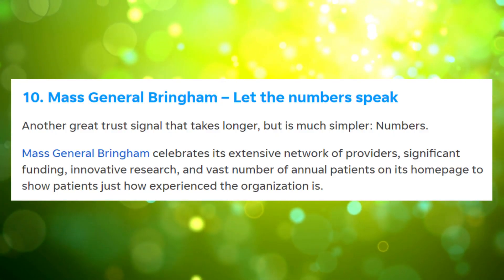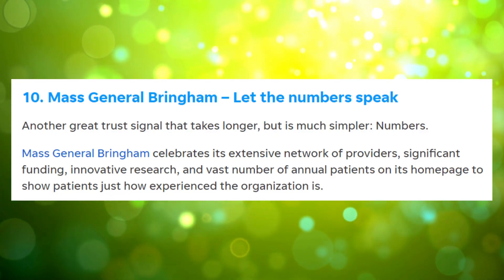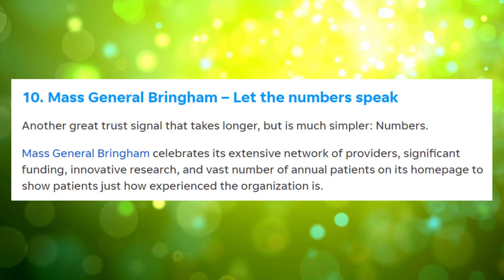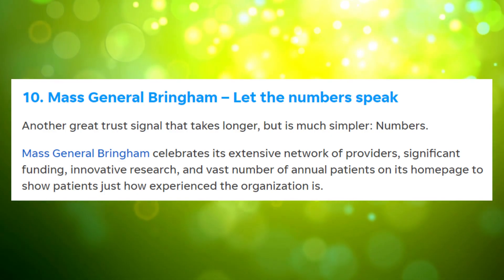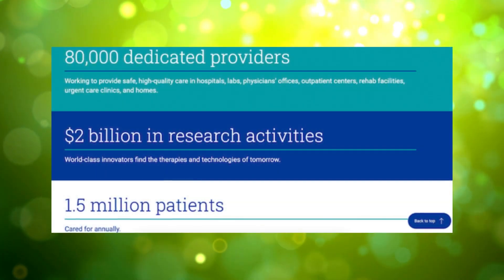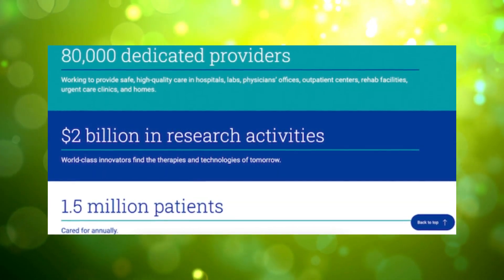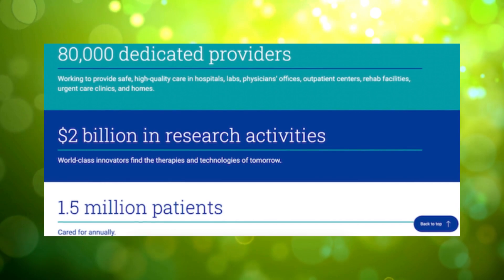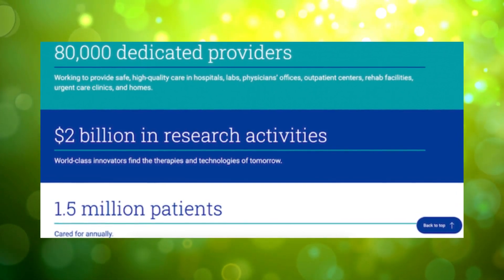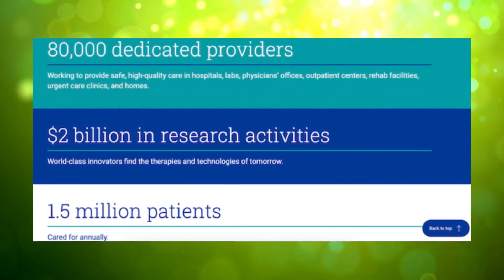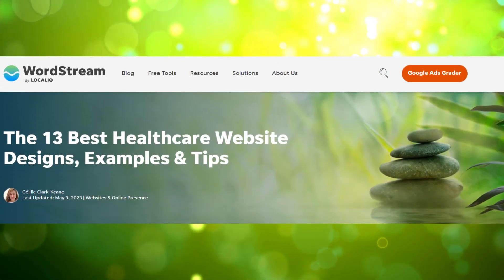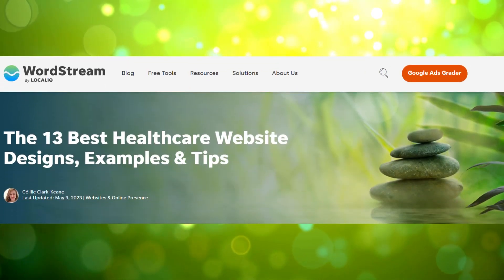Another tip is to use numbers to add to your credibility. Mass General Brigham, for example, celebrates its extensive network of providers, significant funding, innovative research, and vast number of annual patients on its homepage to show just how experienced their organization is. To see the rest of their tips and examples, visit WordStream's article.